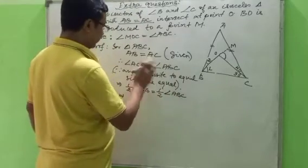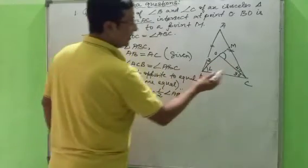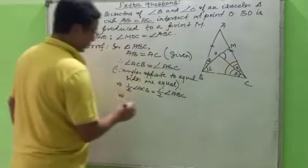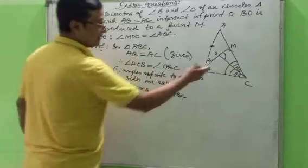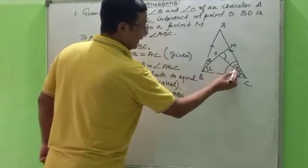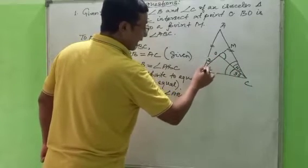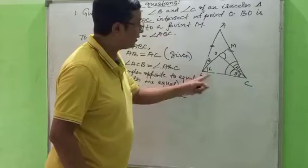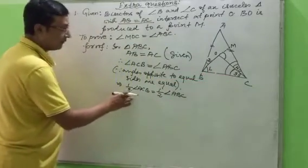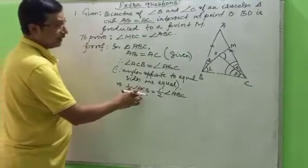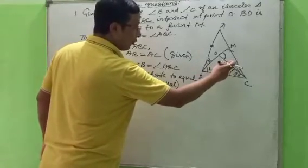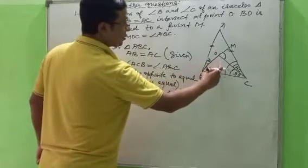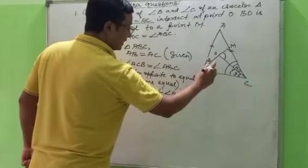Half of angle C gives either angle 3 or angle 4, because OC bisects angle C. Angles 3 and 1 are inside triangle BOC, while 2 and 4 are outside. We take angle 3 equals half of angle ACB. Half of angle ABC we take as angle 1. Since OB bisects angle B.